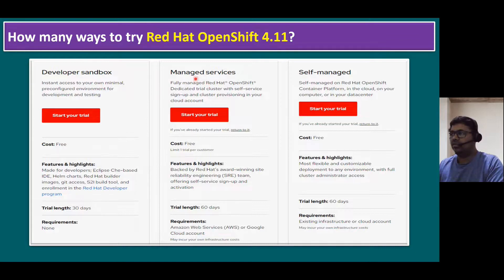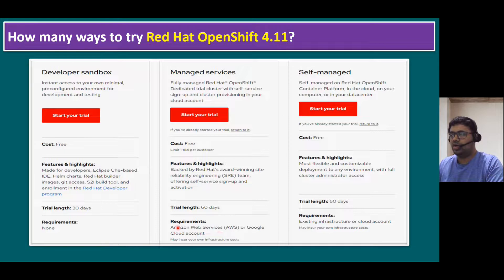Another method is managed services. This is a fully managed Red Hat OpenShift dedicated trial cluster with self-service sign-up and cluster provisioning in your cloud account. This managed services trial edition can run on either AWS (Amazon Web Services) or Google Cloud Platform, so you require any one cloud account to try this version. There is no cost, and the trial length is 60 days.